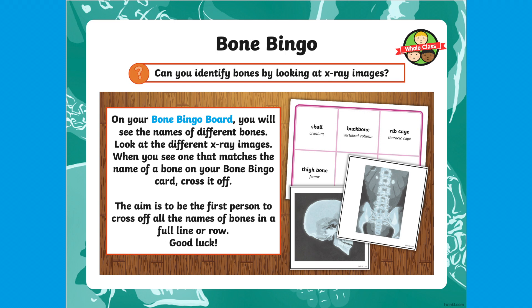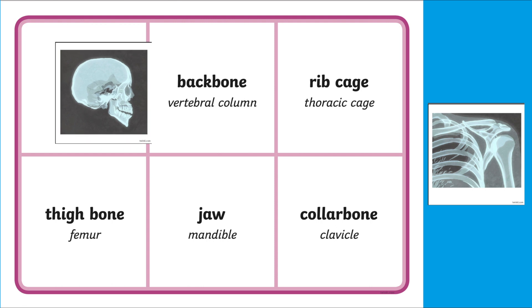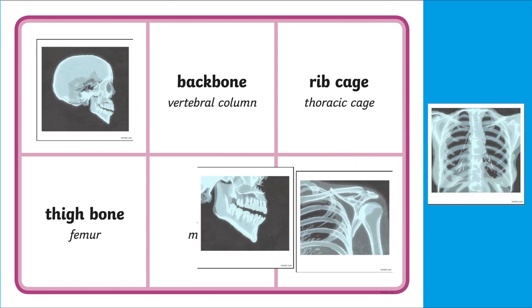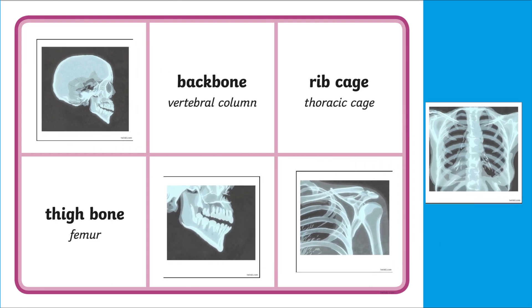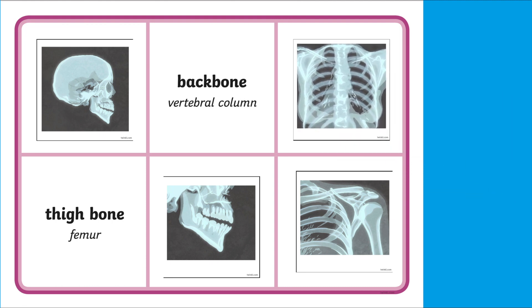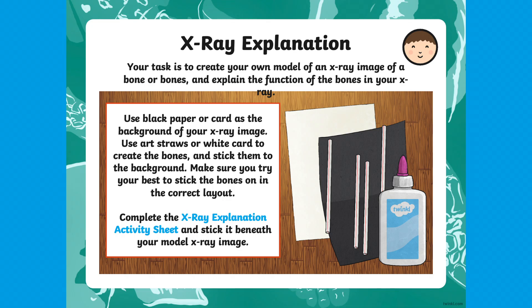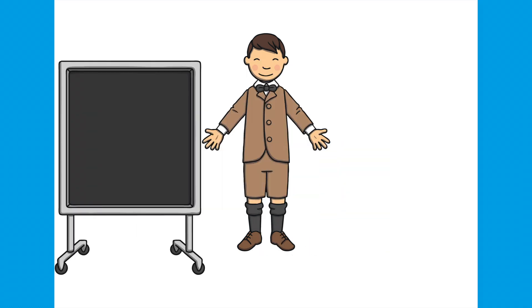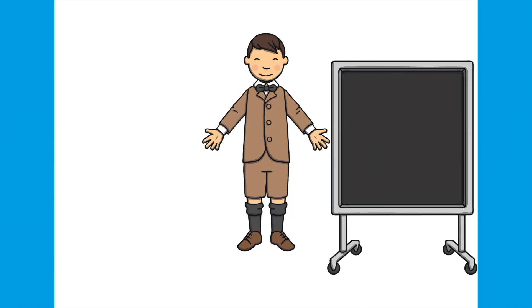For example, children will enjoy playing this bone bingo game where they need to match the different X-ray images to the technical name of the matching body part — a wonderful way to learn and play at the same time. There are also great activities included such as this create your own X-ray using black paper and art straws, a fun way to see just how accurate your child can get.